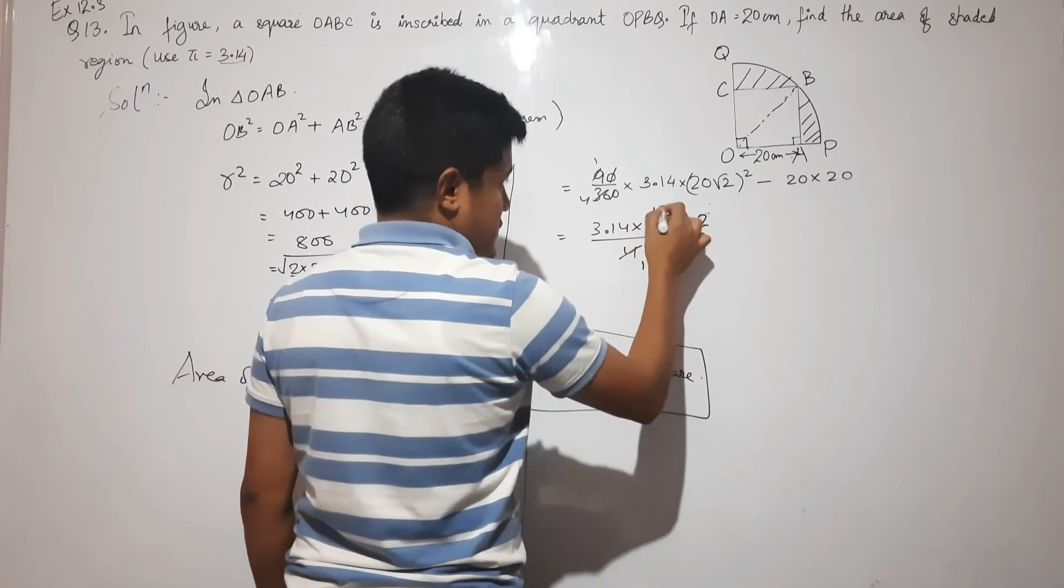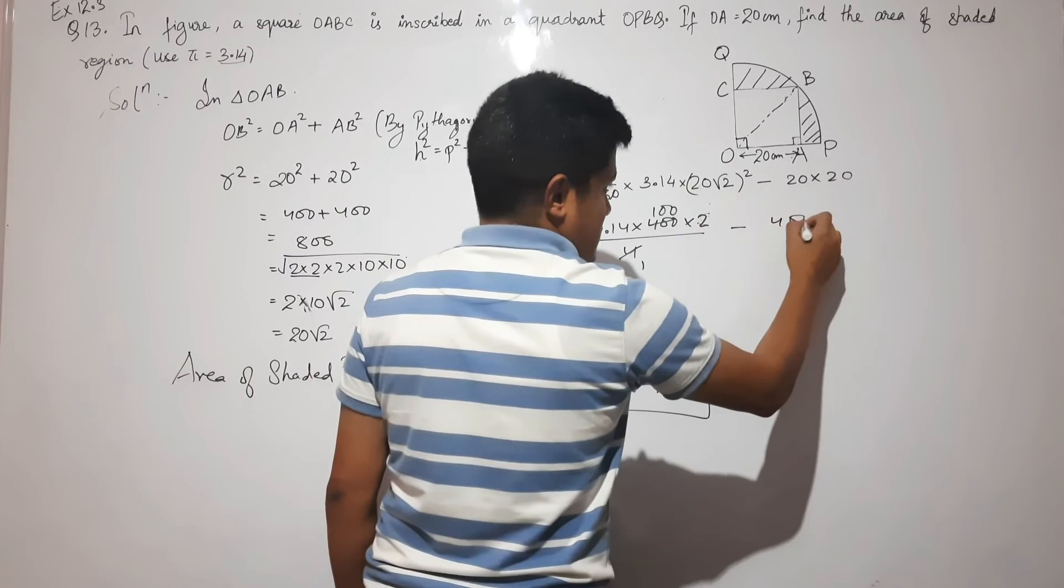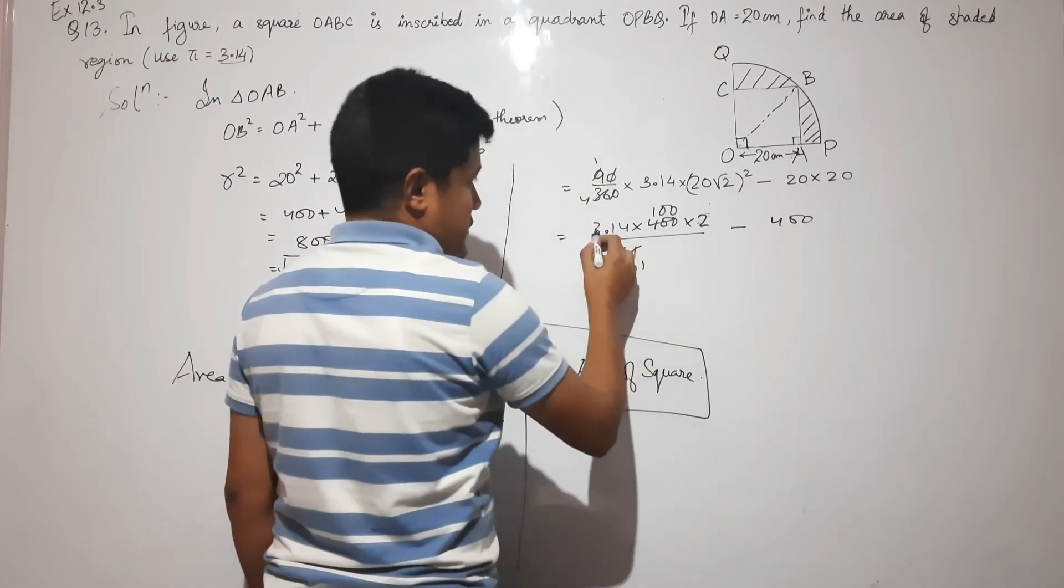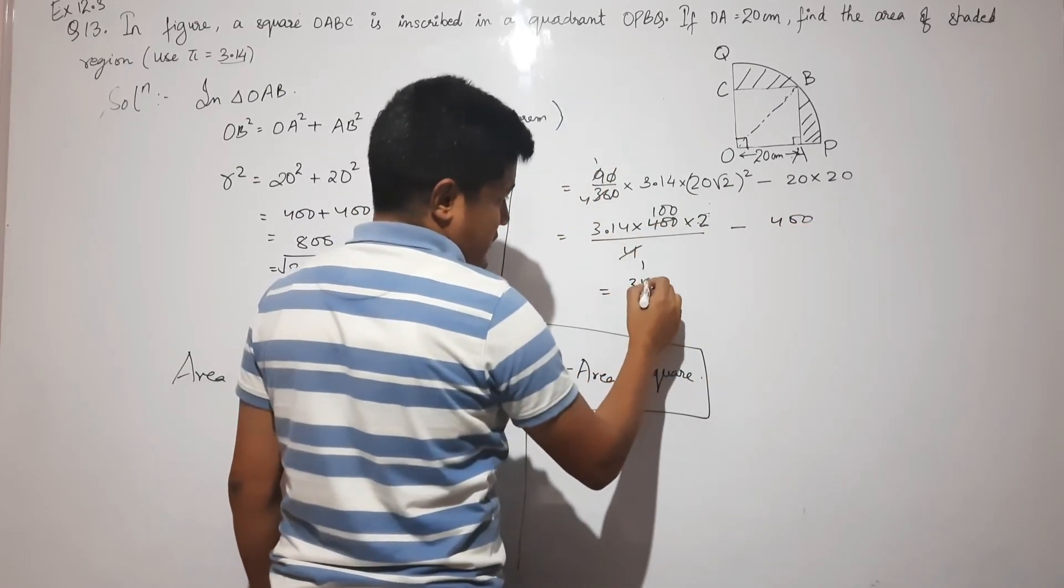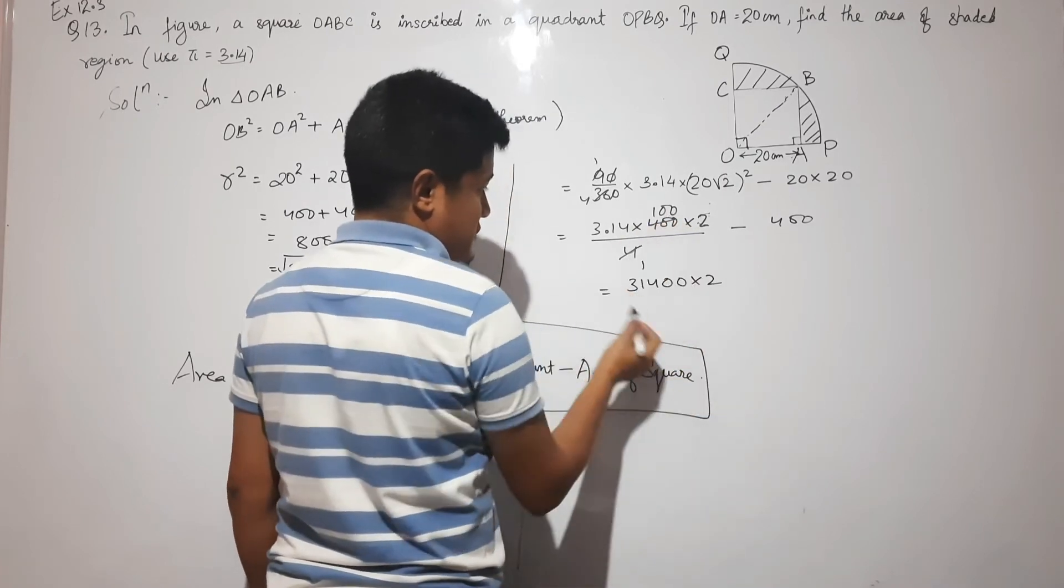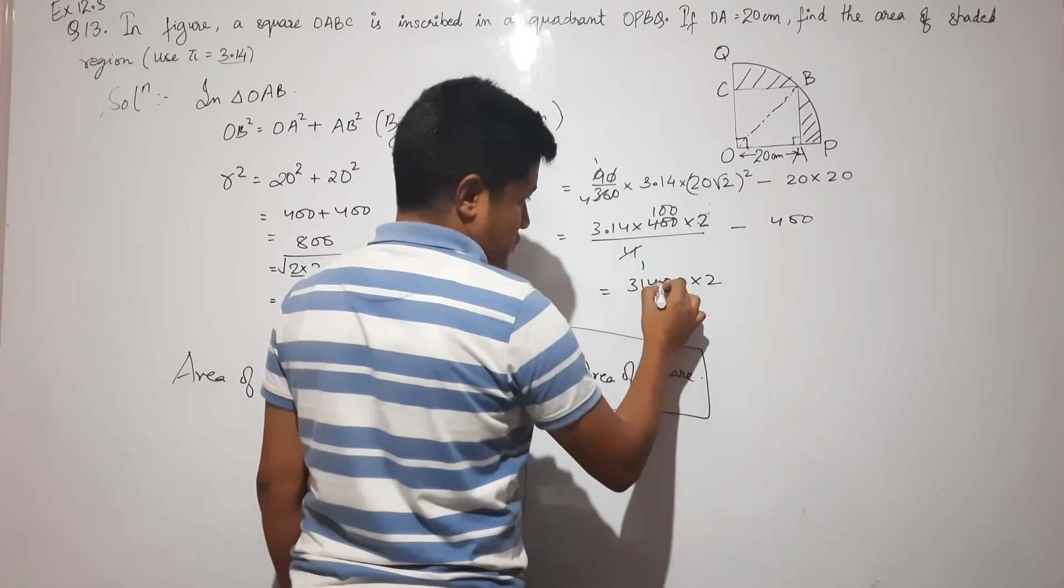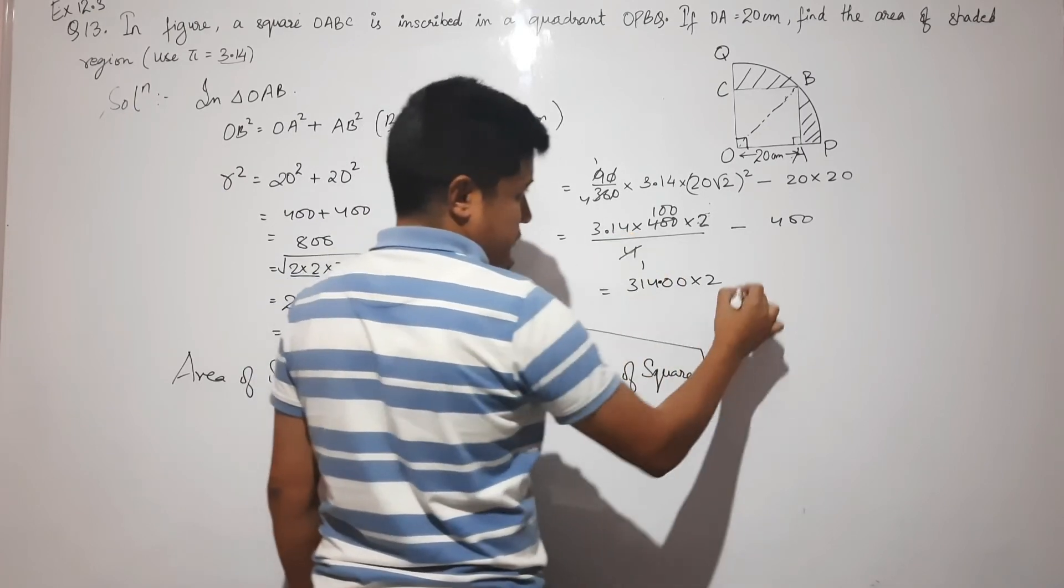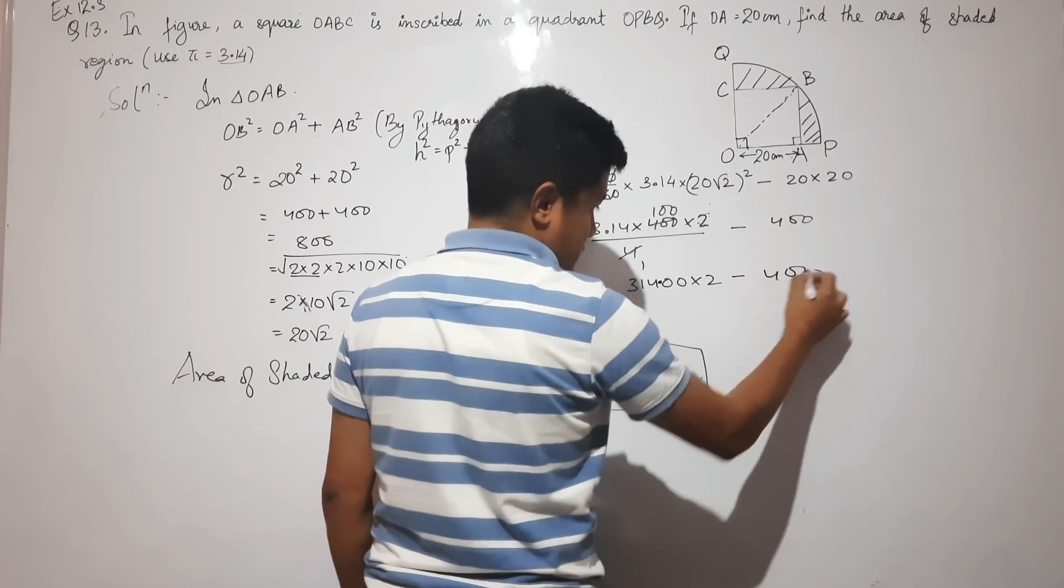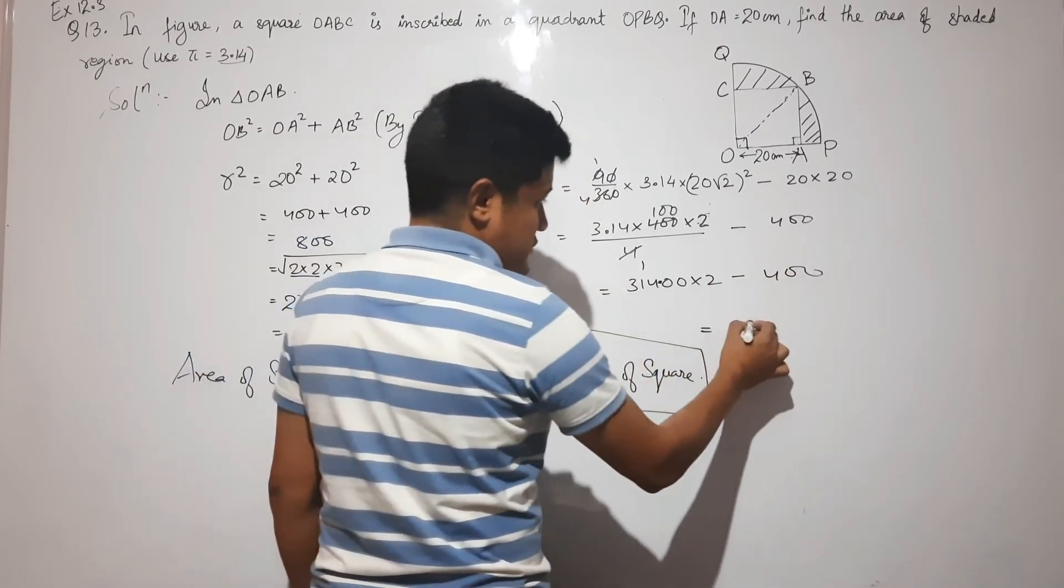If you multiply, 1/4 × 3.14 × 800 = 628. Then subtract 400: 628 - 400.